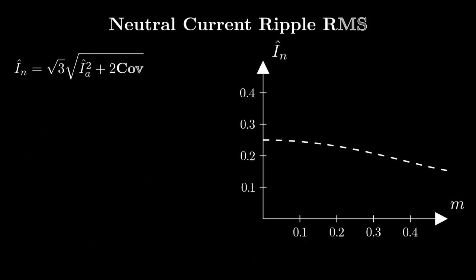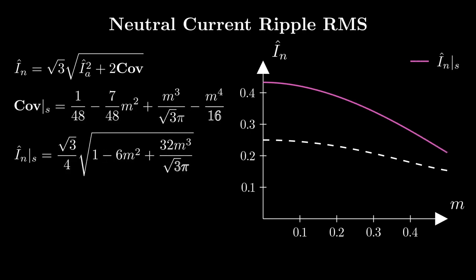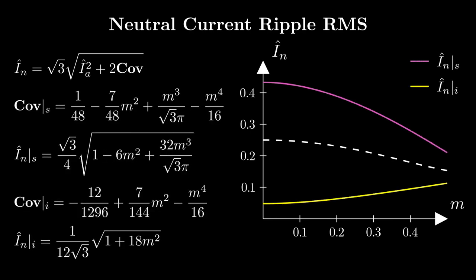In fact, by analytically studying the RMS, it is immediately clear that synchronous PWM is always above the dashed trace representing the zero covariance level, while the interleaved one is always below.